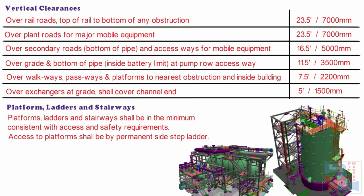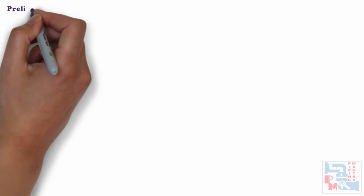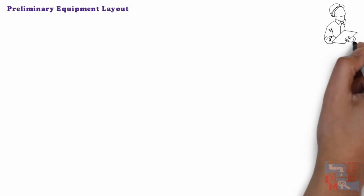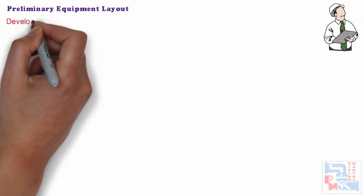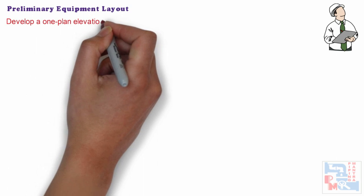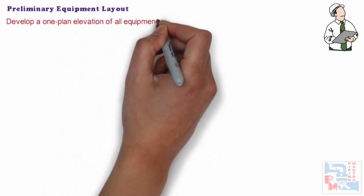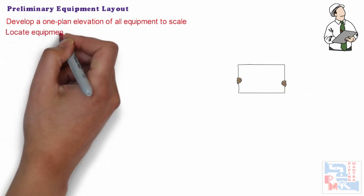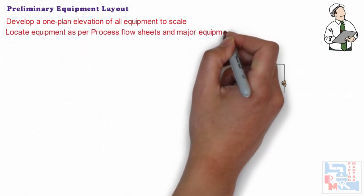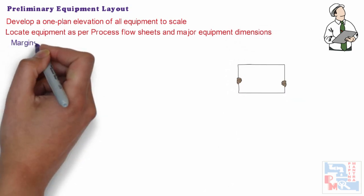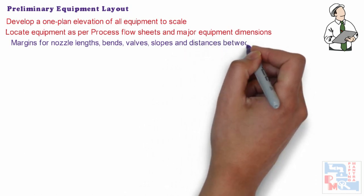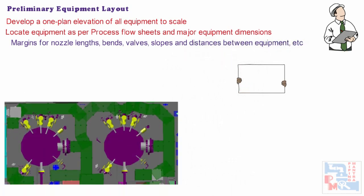Soon you will see a video on access and maintenance requirements from our channel. Now we will see how preliminary equipment layout is prepared and further updated to the final one. The piping engineer should first develop a one-plan elevation view of all the equipment to scale from the equipment list, where he can get major equipment dimensions and relatively locate them to fulfil process requirements as per process flow sheets. He should keep good margins for nozzle lengths, bends, walls, slopes, and distances between equipment while locating them.